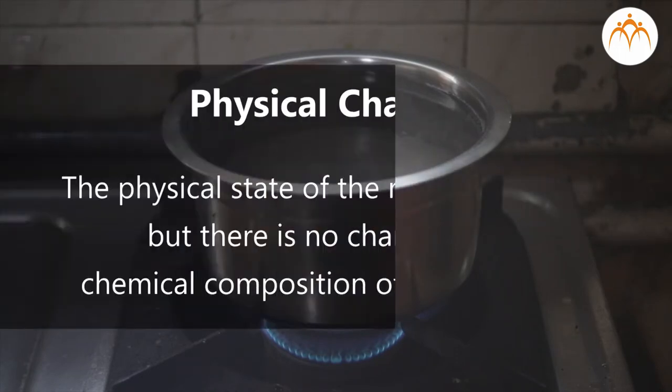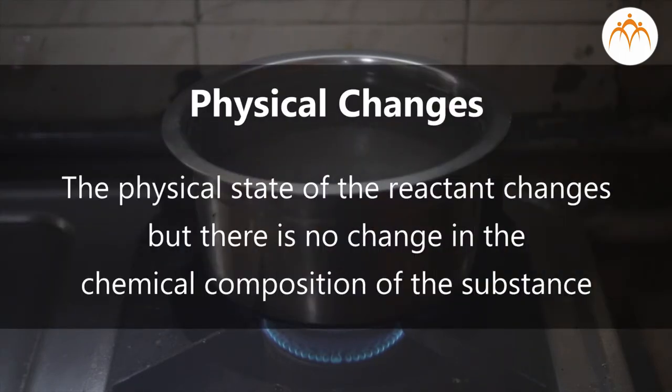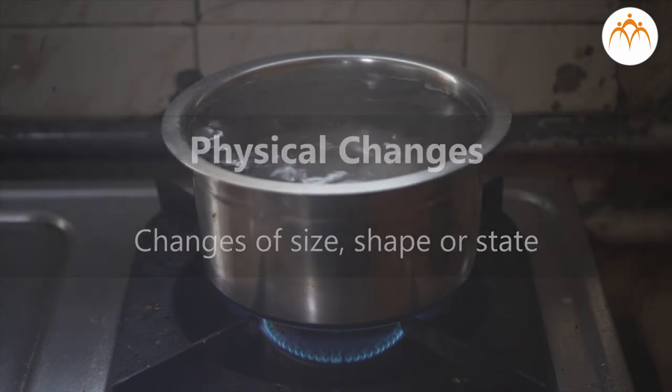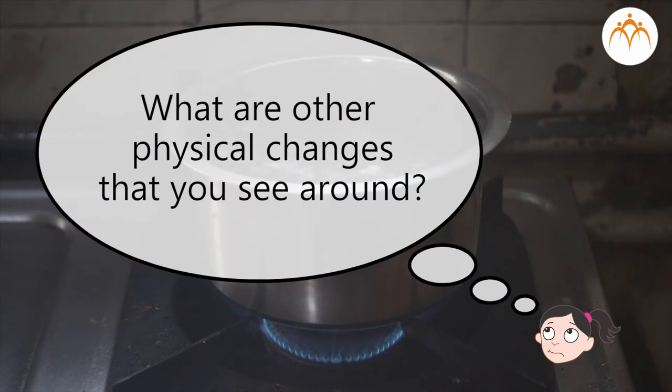We have studied that these types of changes where the physical state of the reactant changes but there is no change in the chemical composition of the substance are called physical changes. Changes of size, shape or change of state are often physical changes. Can you think of any other changes that you see around as physical changes?